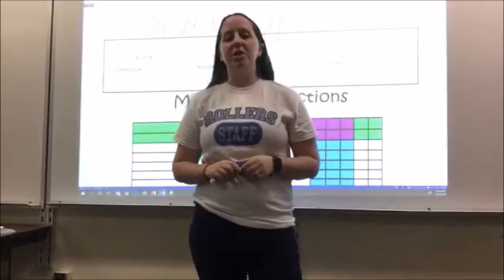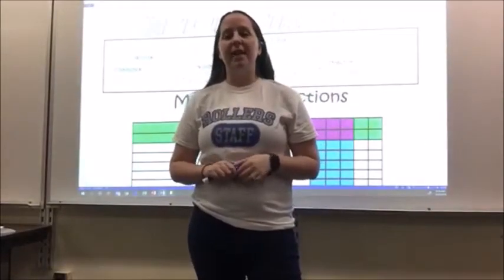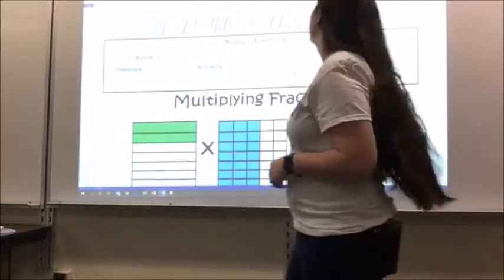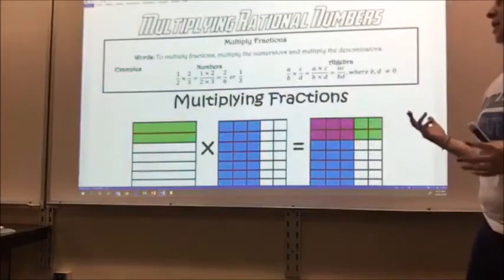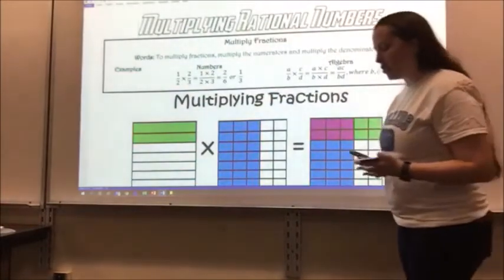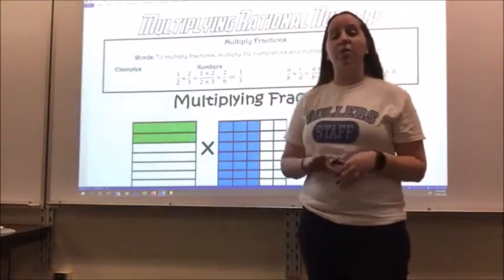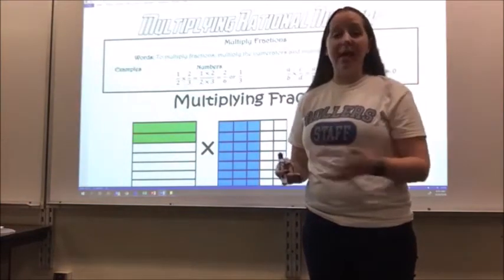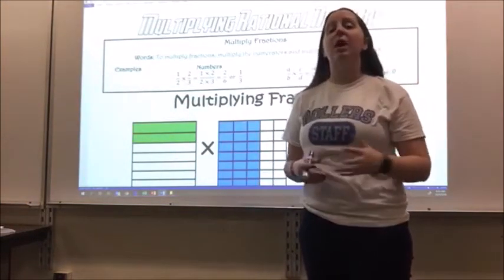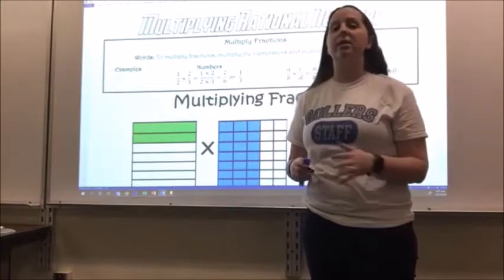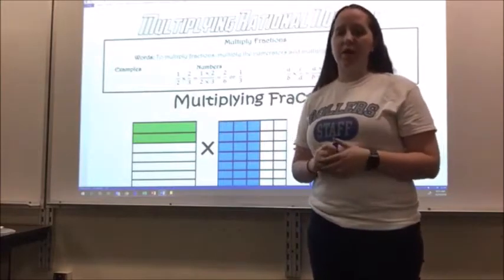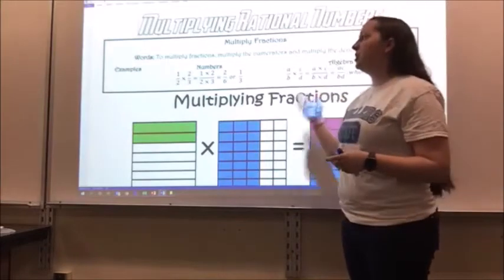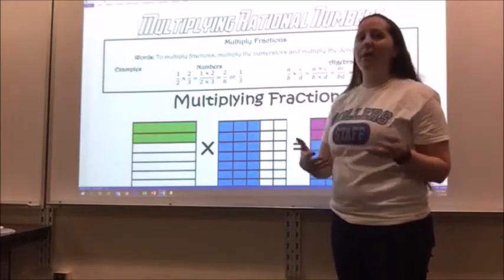This is Chapter 3, Lesson 3: Multiplying Rational Numbers. When multiplying rational numbers, remember we said rational numbers look like fractions, but really rational numbers can be anything we've dealt with since kindergarten or first grade — any type of number. Usually when we're talking about rational numbers, we're going to talk about fractions.